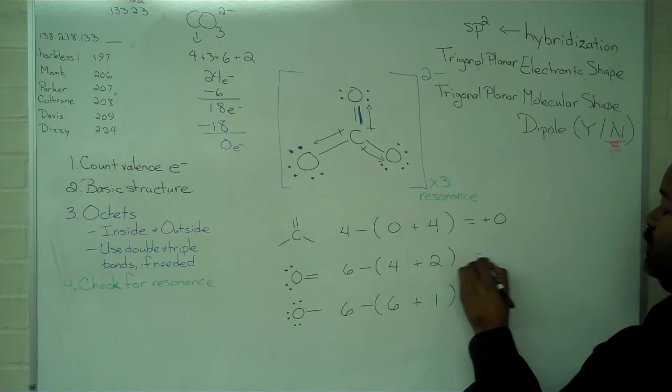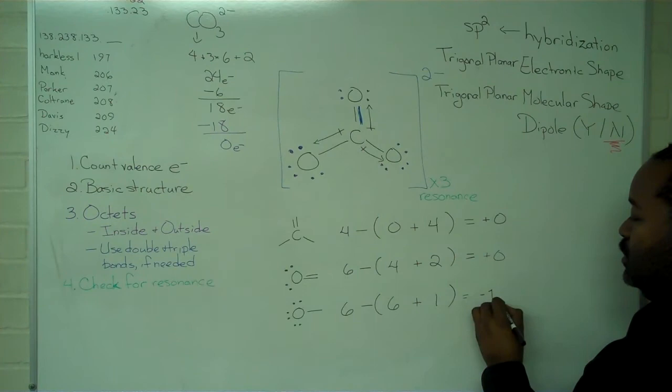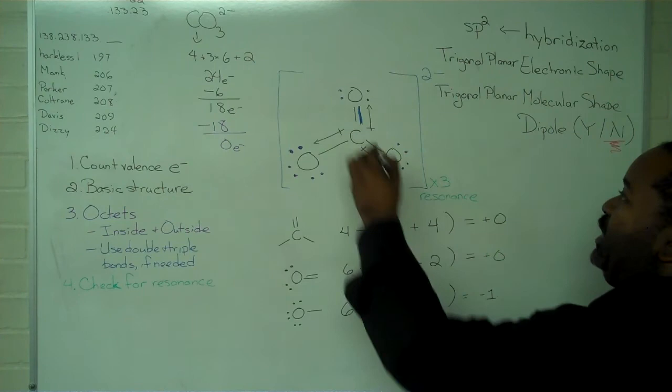So the formal charge on carbon is zero. The formal charge on the oxygen with the double bond is also zero. And the formal charge on an oxygen with a single bond is negative one.